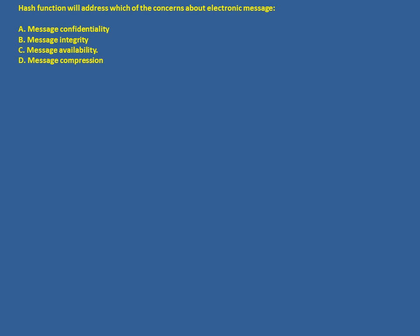Now let us discuss some CISA-based question, answer, and explanation. Question: a hash function will address which of the following concerns about the electronic message — confidentiality, integrity, availability, or compression? As already discussed, hashing is basically for the integrity of the message.